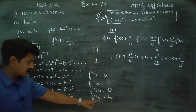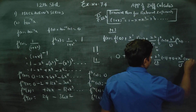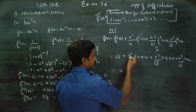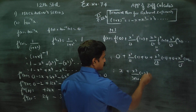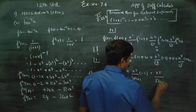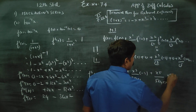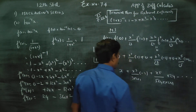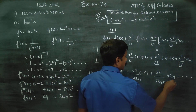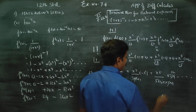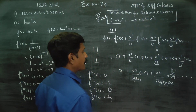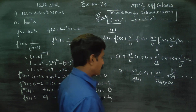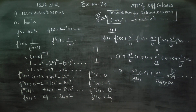Substituting the values, f 5th derivative at 0 is 24. The expansion becomes: x power 1, plus x power 3 by factorial 2 into 1 into minus 2, plus x power 5 by factorial 4 into 1 into 2 into 4 into 4 into 1, into x power 2 into 2 into 1 into 24. Cancelling: 4, 3s are 12, 12, 2s are 24.